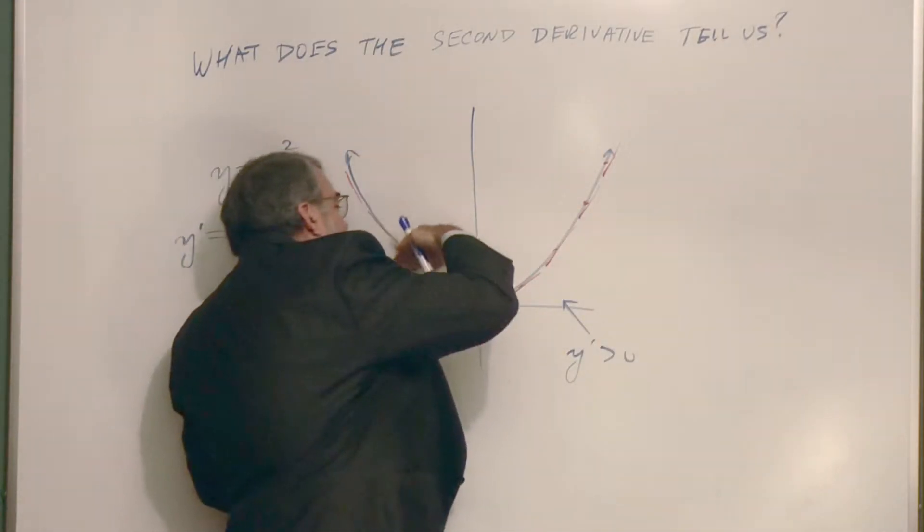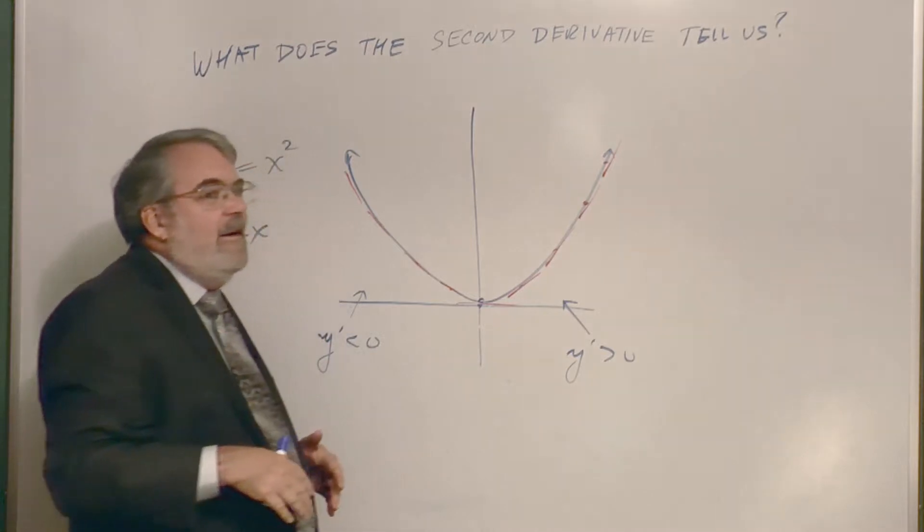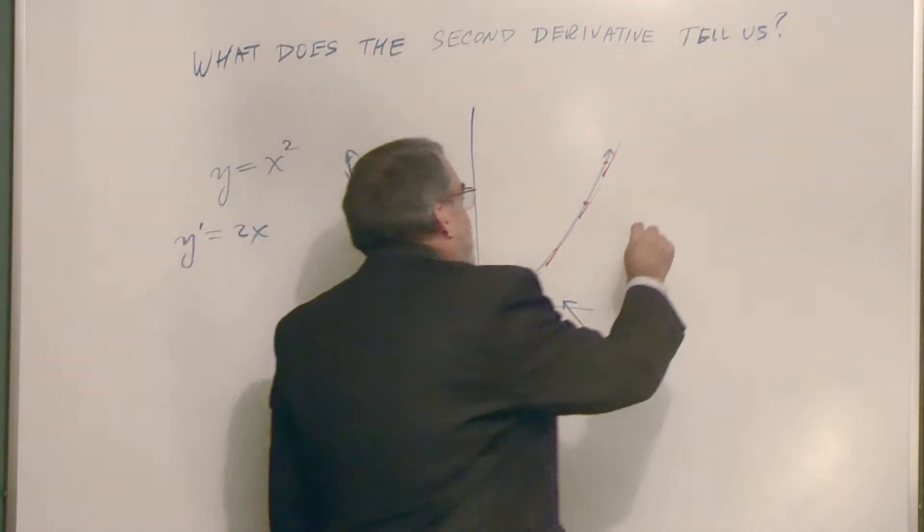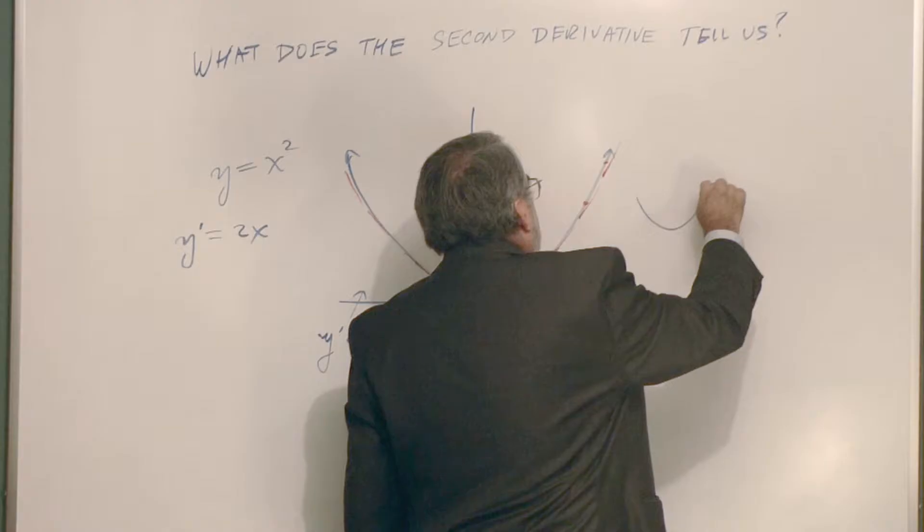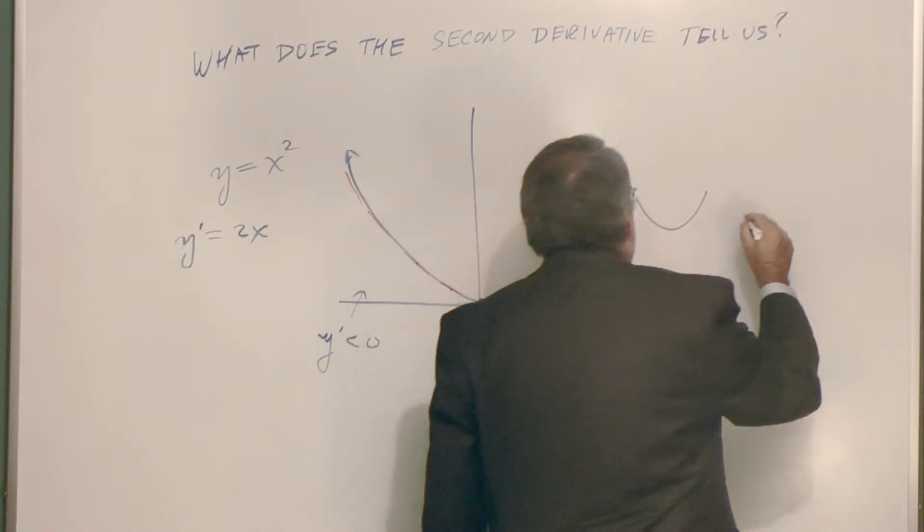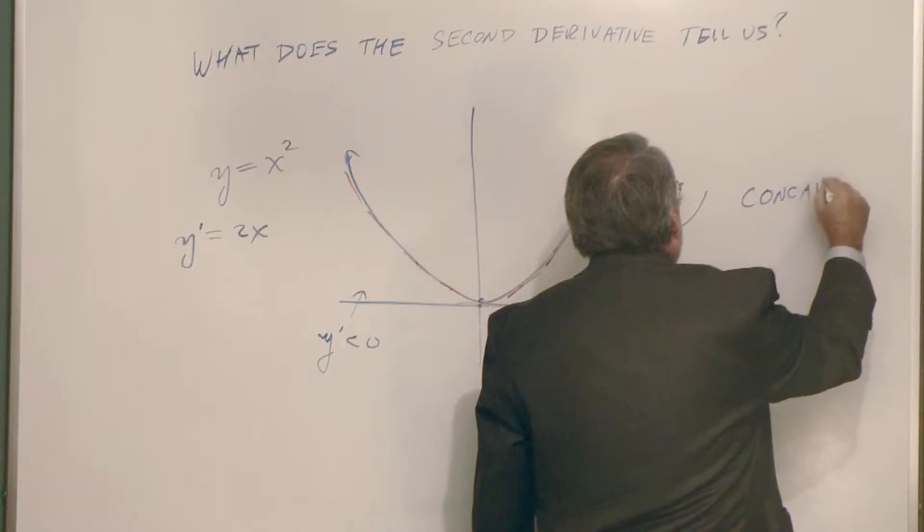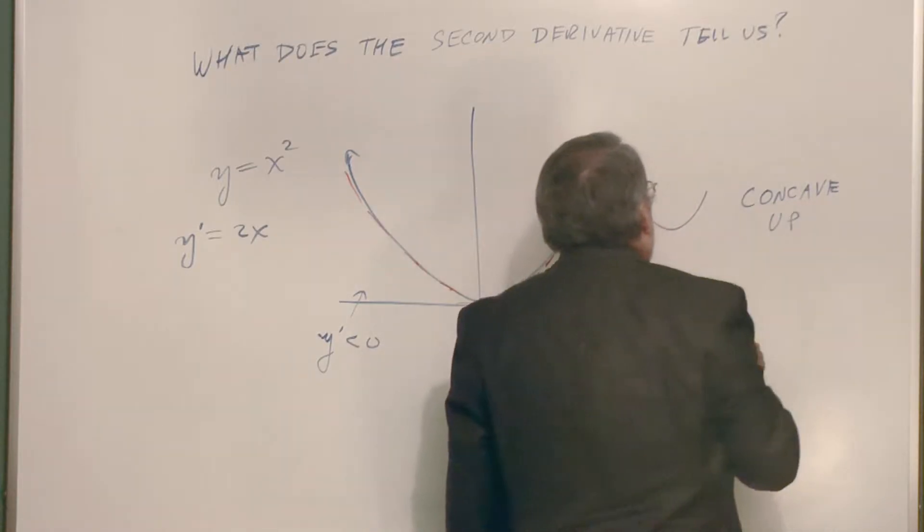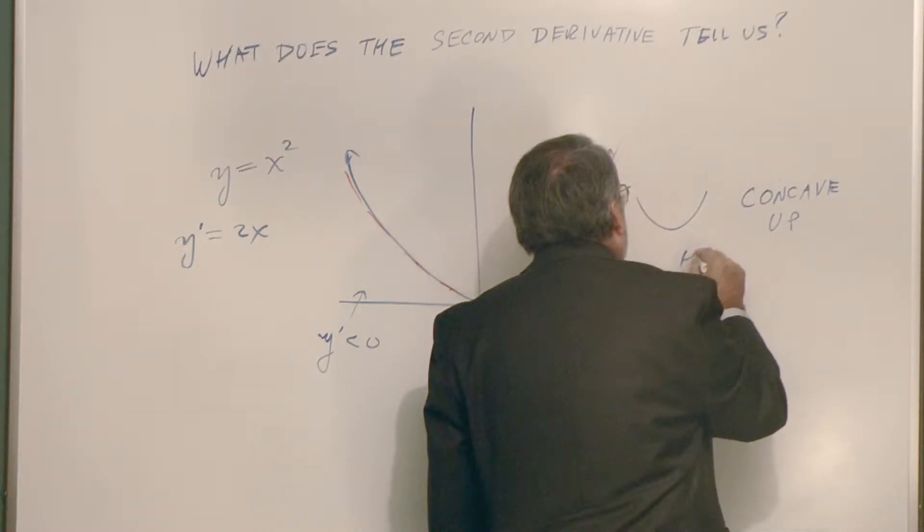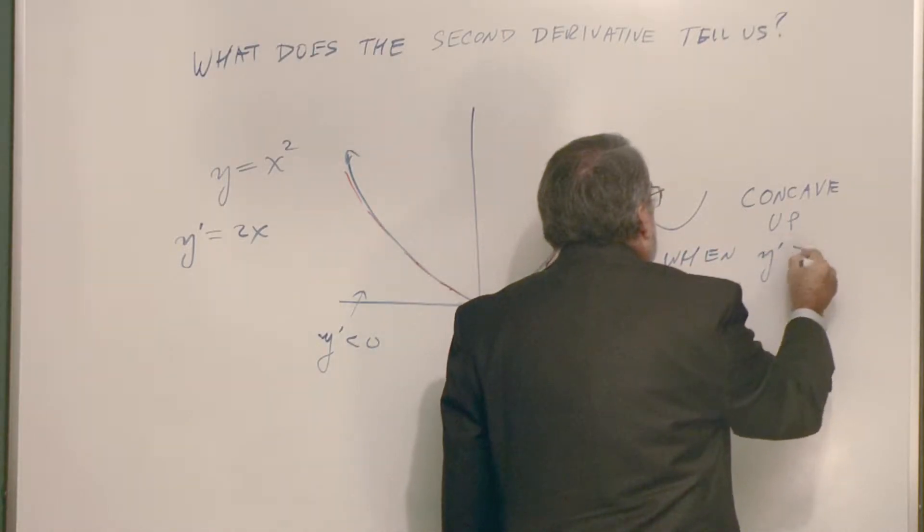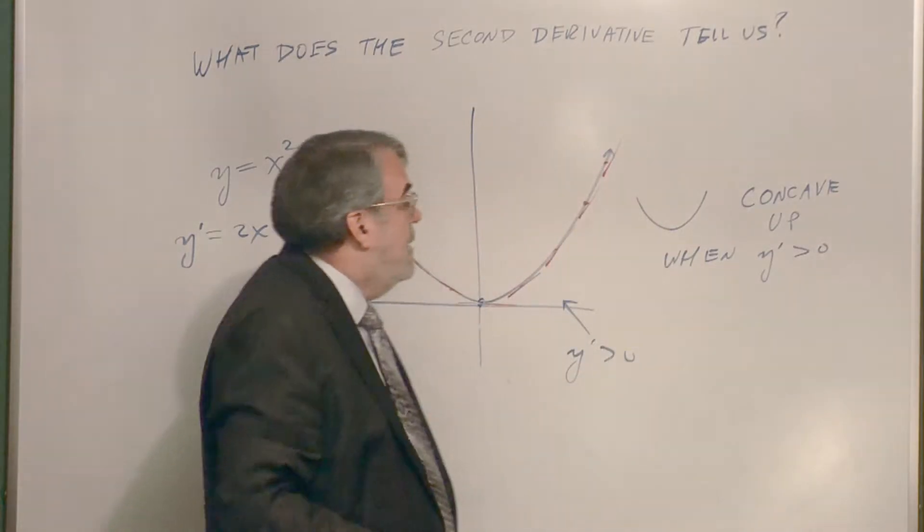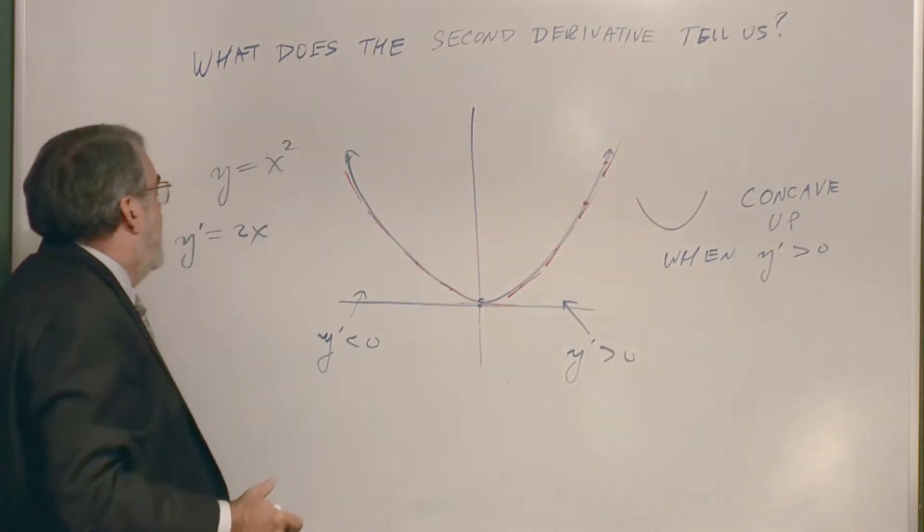Well, that describes upward concavity. And so we say that this shape here is concave up. We call that concave up. And it happens when the derivative is positive. Positive derivative goes concave up.